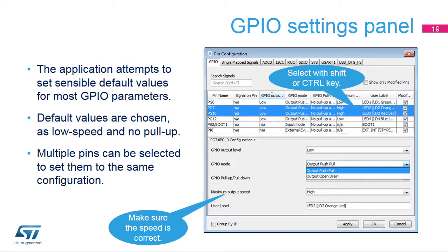The GPIO tab in the pin configuration window facilitates the configuration and initialization settings for each pin. Each pin is listed in table format, providing an overview of the pin configuration along with its user label. Sort, search, and apply modifications to selected pins using drop-down menus. Default values assigned by the tool are safe, but may not work with certain peripheral configurations. Check that the GPIO speed selected by the tool is sufficient for the peripheral communication speed, and that an internal pull-up is selected where needed.